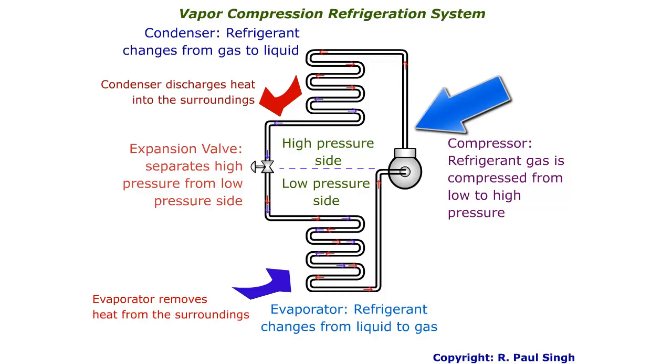in vapor state. And so we see these red arrows going through the condenser where the refrigerant condenses into a liquid. As the refrigerant vapors condense into liquid, heat is discharged to the surroundings, as we see here.